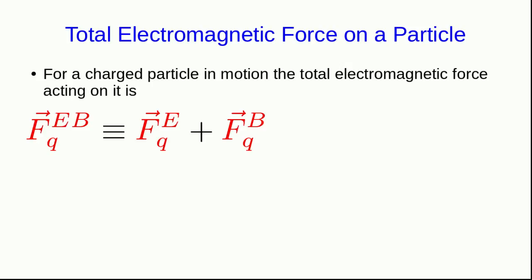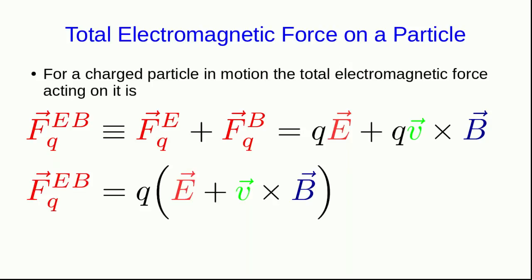So we can write down the total electromagnetic force acting on a moving charged particle, and it will simply be the electric force plus the magnetic force. And we know expressions for both of those. And it's often convenient, since both of those forces are proportional to the charge on the particle, to factor the charge out and write this force this way. And this often gets referred to as the Lorentz force, but all that's meant by it is the total electromagnetic force.